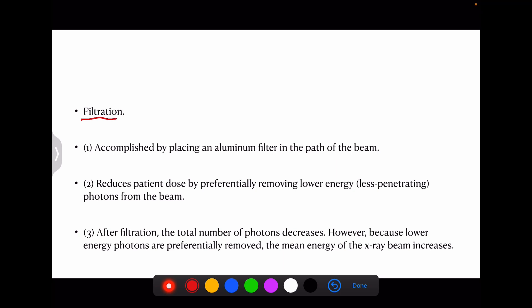Coming to filtration, again very important for dental board exams. It is accomplished by placing an aluminum filter in the path of the beam. For example, this is the aluminum filter, this is the path of the beam, this is the object. It reduces patient dose by preferentially removing energy. What happens is whenever the source of energy or x-ray beam enters, certain energy beams are also scattered. These energy beams are basically the ones known as low penetrating energies or photons. They are removed as described by blue. So the patient is exposed only to a certain amount of energy, the extras is removed. After filtration, the total number of photons decreases. However, the lower energy photons are preferentially removed and the mean energy of the x-ray beam actually increases.